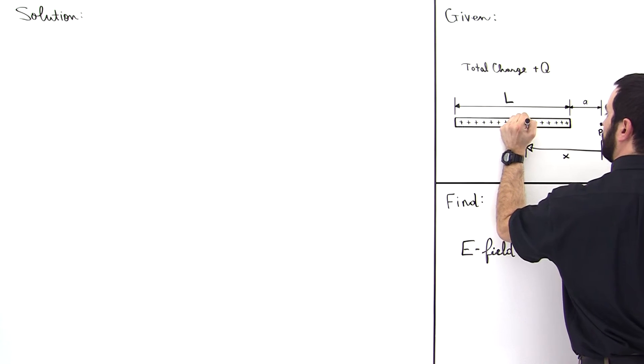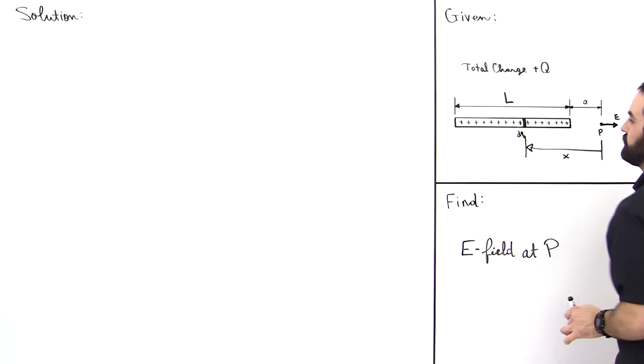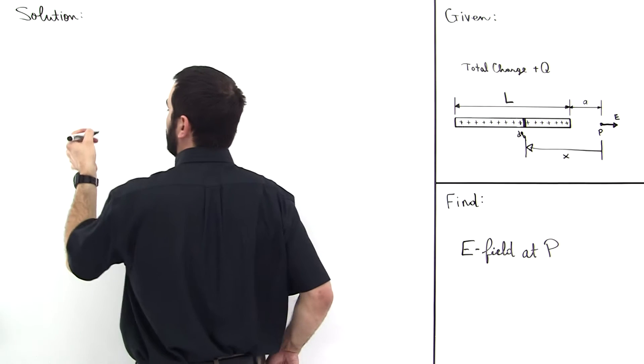This is out to some small element, some little bitty element of the charge, dQ. We'll label dQ.